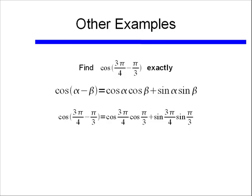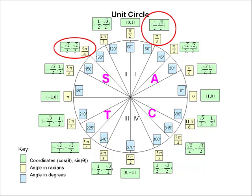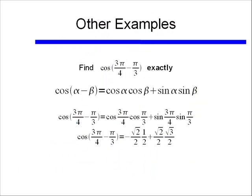So if we go to our unit circle, we remember that sine of pi over 3 is equal to square root of 3 over 2, cosine of pi over 3 is equal to 1 half, and sine of 3 pi over 4 is square root of 2 over 2, and cosine of 3 pi over 4 is negative square root of 2 over 2. Going back to our difference identity, we have cosine of 3 pi over 4 minus pi over 3 equaling negative square root of 2 over 2, times 1 half, plus square root of 2 over 2, times square root of 3 over 2.